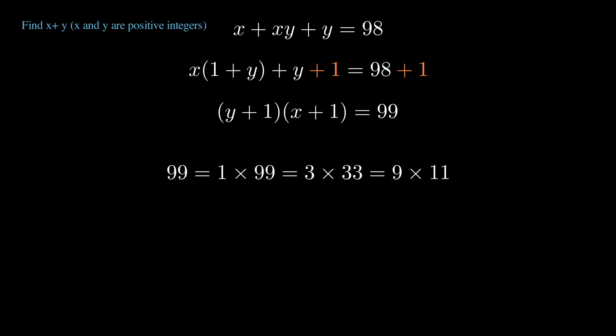Remember we're only going for positive integers here and there's only so many positive ways to factor 99 into whole numbers. Thus our product, which is x plus one times y plus one, could equal one times 99, three times 33, or nine times 11.